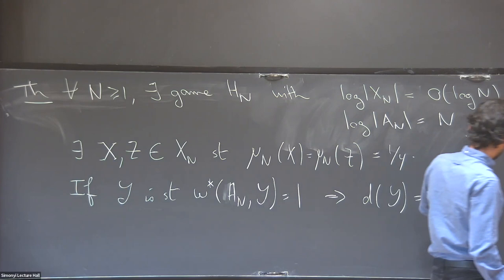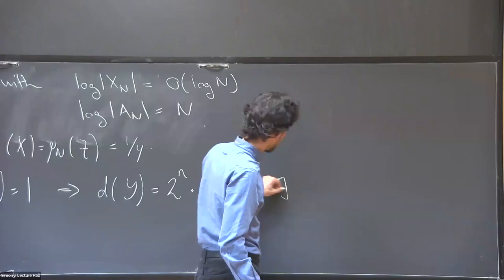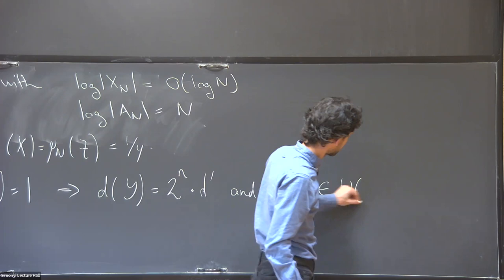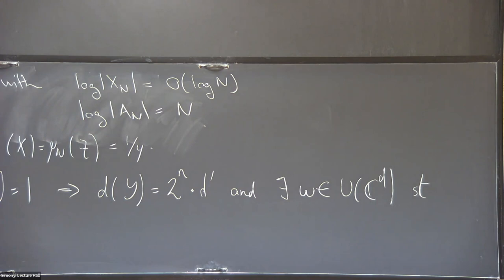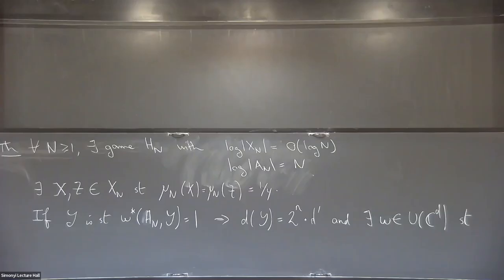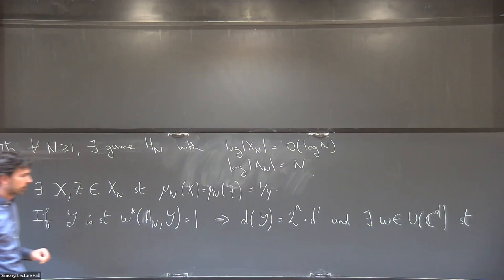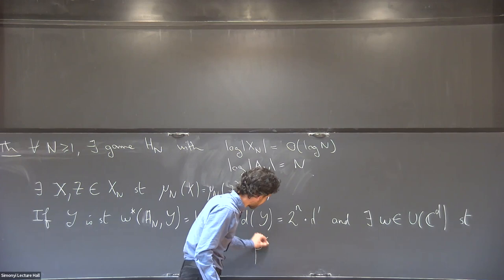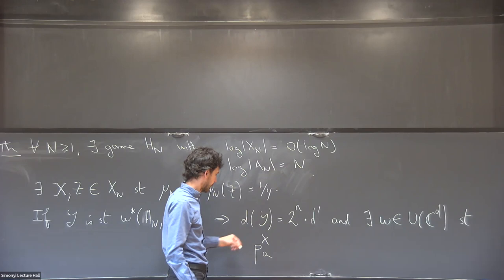The notation: the measurement operator for question X is P_X indexed by N-bit answers a. As part of any strategy for this game, for each question there's a projective measurement — a collection of projectors indexed by answers. For the two distinguished questions X and Z, the projections P_X(a) are orthogonal projections on C^D summing to identity over a, and similarly for Z. What's special is that to succeed in this game with probability one, these projections must be unitarily equivalent to the ones written on the board — the spectral projections associated with the Pauli matrices.